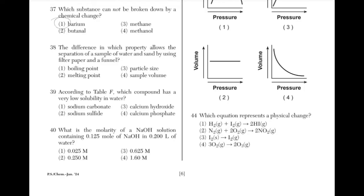The difference in which property allows separation of a sample of water and sand by using filter paper and a funnel? The answer is choice 3. Filtration can allow a liquid to be separated from a solid due to a difference in particle size.